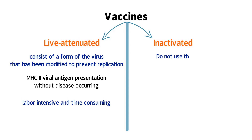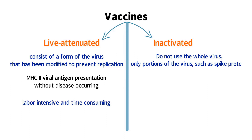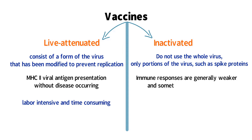Inactivated vaccines do not use the whole virus, only portions of the virus, such as spike proteins. While this eases the production requirements, immune responses are generally weaker and sometimes not long-lasting with inactivated vaccines.